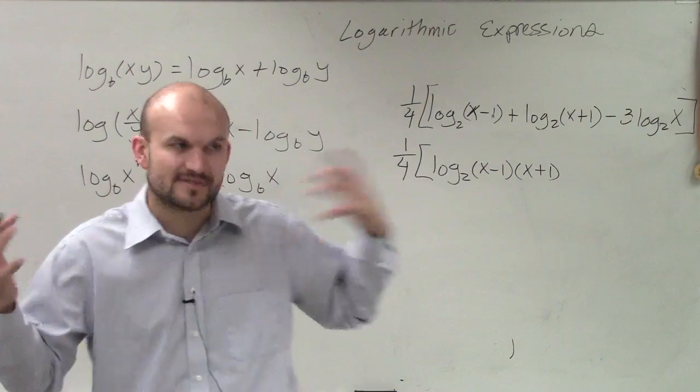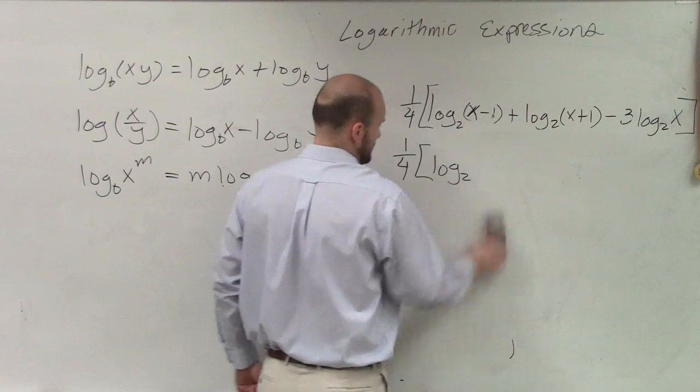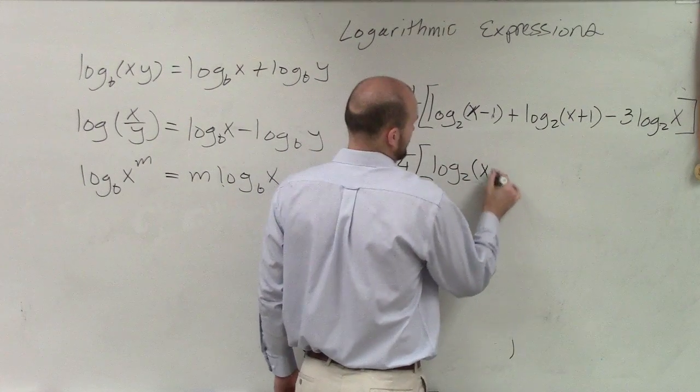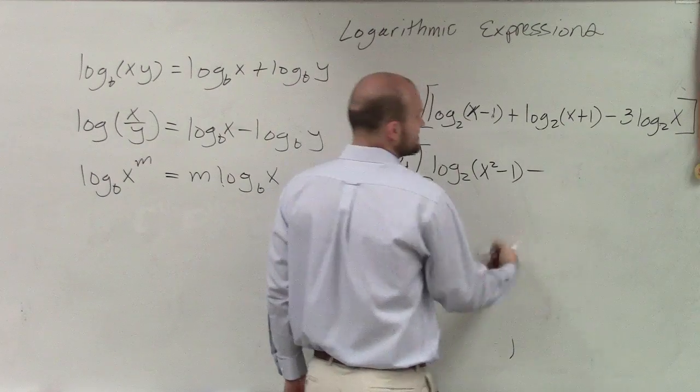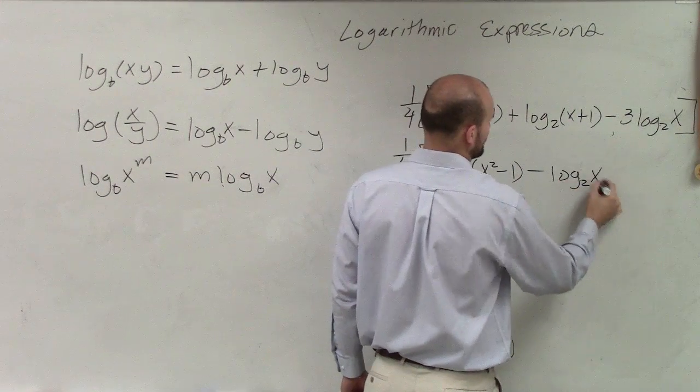Knowing that it's a difference of two squares multiplying up, this is just going to become x squared minus 1. So x squared minus 1. Then we have minus the 3. I can throw that up top. Log base 2 of x squared.